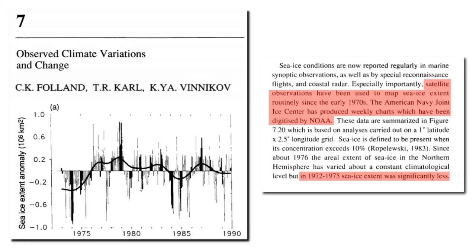The graph shows satellite measurements of Arctic sea ice extent going back to the year 1972. The text of the United Nations document reads: satellite observations have been used to map sea ice extent routinely since the early 1970s. From 1972 to 1975, sea ice extent was significantly less. So according to the United Nations report, sea ice extent was at a minimum in 1974 and it reached a maximum in 1979.